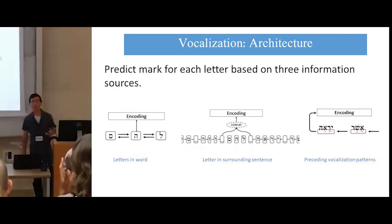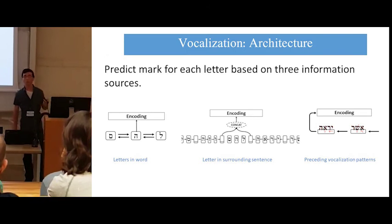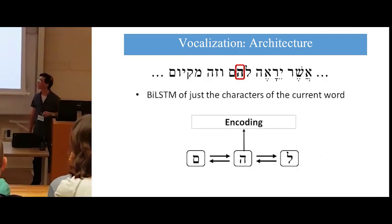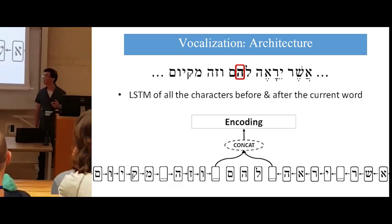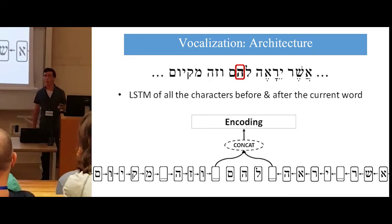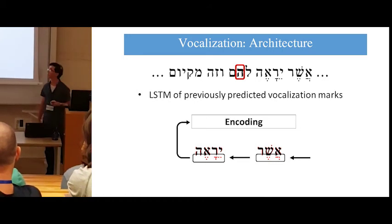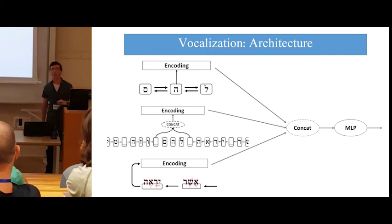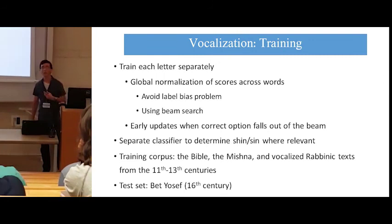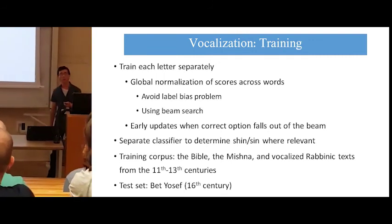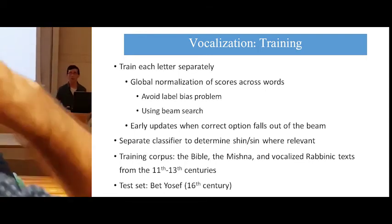We trained a neural classifier to determine, at each letter position, what the correct vocalization mark is on the given letter. We predict the vocalization mark for each letter based on three information sources. The first is a bi-LSTM encoding of just the characters of the current word. The second is an LSTM encoding of all the characters before and after the current word in the sentence. The third is an LSTM encoding of all the previously predicted vocalization marks in the sentence. We concatenate all three items together and feed them into an MLP. Although we train for each letter separately, we globally normalize the scores across each word to avoid the label bias problem. We use beam search to find the optimal set of predictions for every given word.